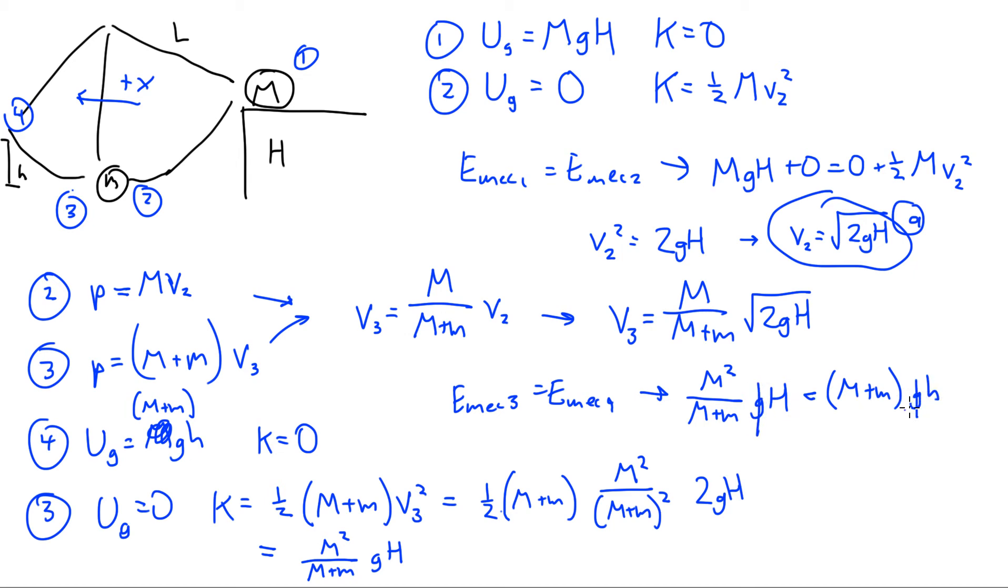So g's are going to cancel out, and what you're going to get, this is going to go underneath. So little h equals big M squared over big M plus little m squared. Okay, and it works out, sorry, times big H. There we go. And that works out dimensionally, so that's good. This, by the way, was a